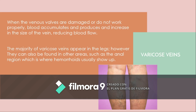When veins are damaged or do not work properly, blood accumulates and produces an increase in the size of the vein, reducing blood flow. The majority of varicose veins appear in the legs; however, they can also be found in other areas, such as the anal region, where hemorrhoids usually show up. Here is a picture of how varicose veins look.